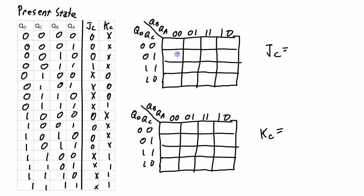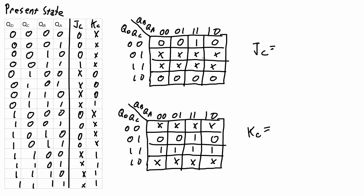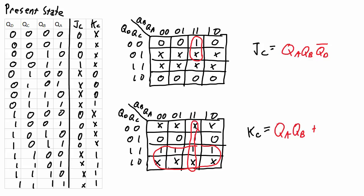I then repeat the process for JC and KC. For the JC Karnaugh map, the one grouping gives me JC = QA · QB · (NOT QD). For KC, I have a grouping of 4 and a grouping of 8, giving KC = (QA · QB) OR QD. Now that I have expressions for JC and KC, I can create logic circuits using these expressions, and the inputs of each logic expression will go to the J input and the K input of flip-flop C.